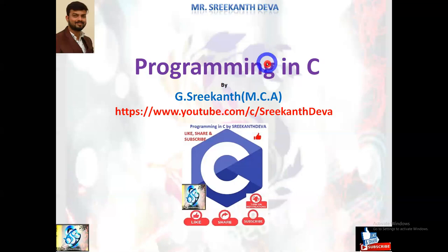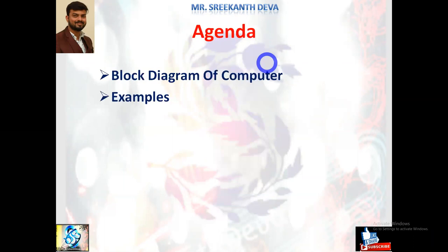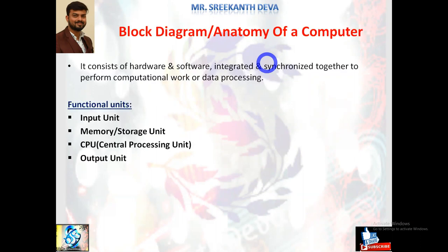Hello students, welcome back to Programming in C. I'm Srikant. Today we are discussing computer fundamentals. The agenda of this session is the block diagram of a computer. We discussed what a computer is, the basic components of computer systems like software, hardware, firmware, and humanware. Software refers to intangible components — examples include Windows-based applications, Notepad, Microsoft Word, Excel, Windows Media Player, and antiviruses.